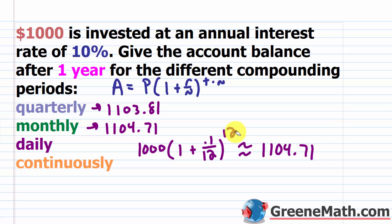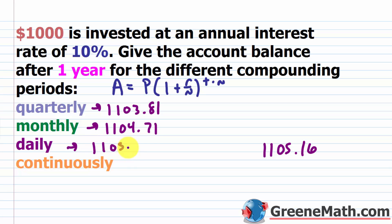Now if we go with daily, that would be 365 days for a normal year. If it was a leap year, it'd be 366. So in this case, if you punch that up on a calculator, you're going to get about $1,105.16.